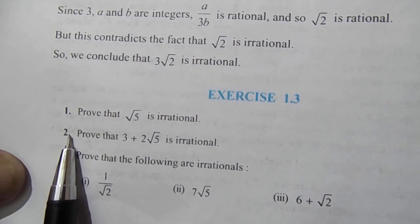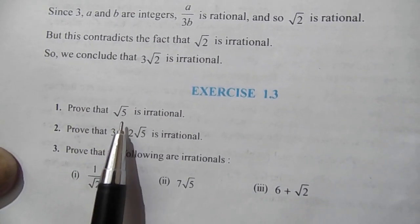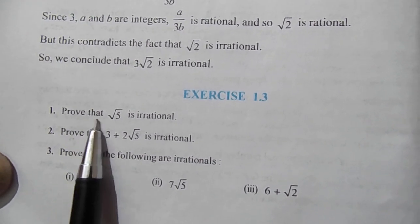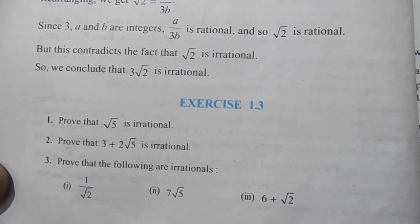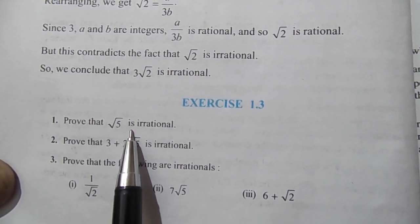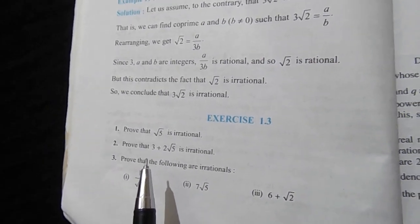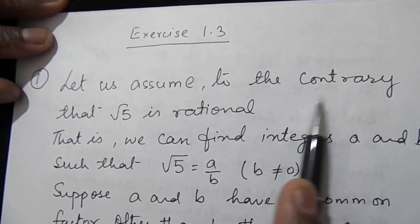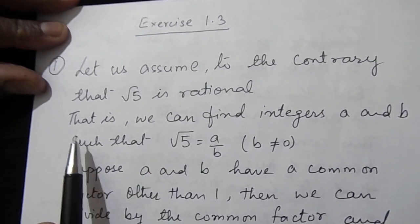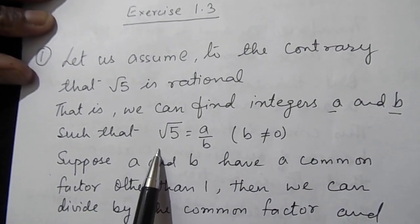We will solve questions 1 and 2 of exercise 1.3, and on a similar pattern you can solve question 3 yourself. Question 1: prove that √5 is irrational. Whenever you have to prove this kind of question, we use contradiction — we assume the number is rational and then prove that assumption is wrong. So let us assume to the contrary that √5 is rational, meaning we can find integers a and b such that √5 = a/b, where b ≠ 0.